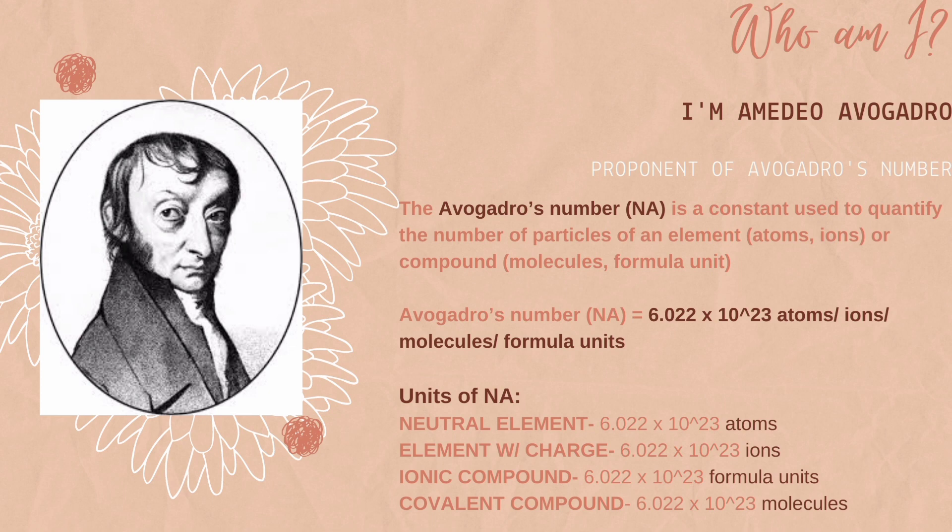Avogadro's number has different units: atoms for neutral elements, ions for elements with charge, formula units for ionic compounds, and molecules for covalent compounds.